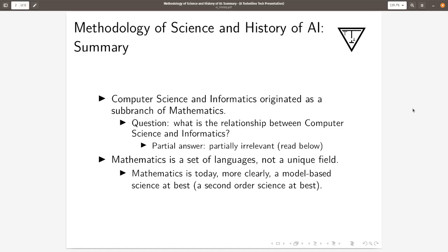Computer science and informatics originated as sub-branches of mathematics. The first question we can ask is what is the relationship between computer science and informatics, and the partial answer is that this is partially irrelevant because mathematics is a set of languages, not a unique field.